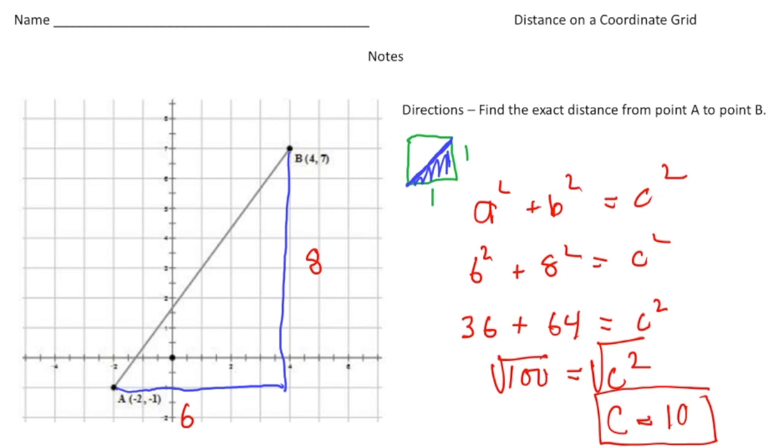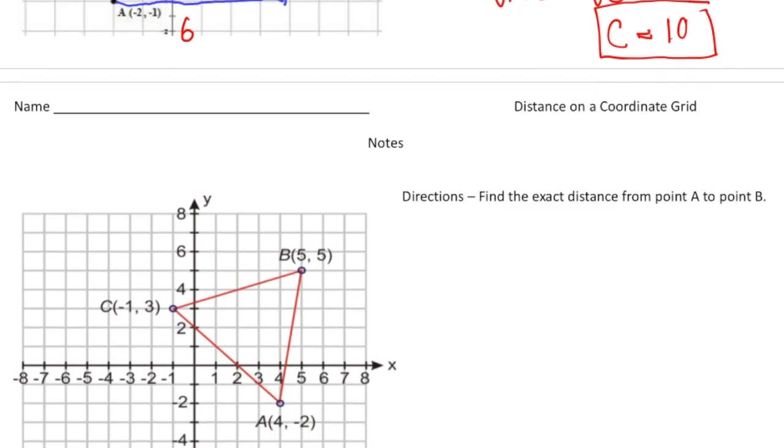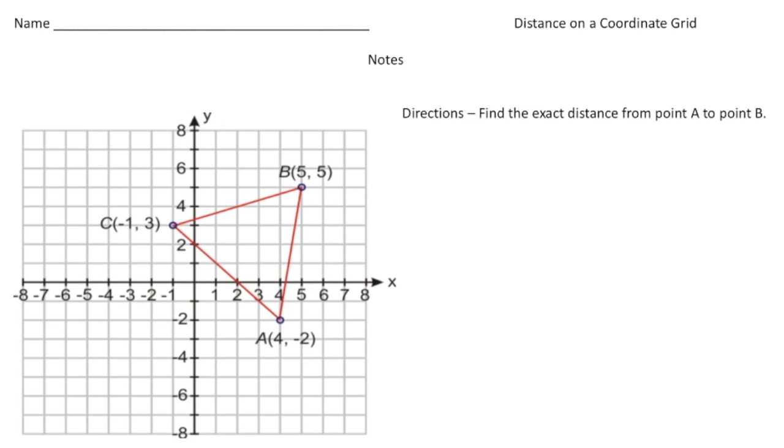So let's actually do one more problem together. And here it is. Now notice we already have a triangle, but it says the direction is to find the exact distance from point A to B. So we want to know the distance from this point here to this point way up here. And again, we need to add the legs to make this a right triangle. So I'm going to use a different color to make it really obvious. So our right triangle is going to be like this now. Everybody see that? So there's our leg one. There's our leg two. And that red line now, the distance from A to B is the hypotenuse.